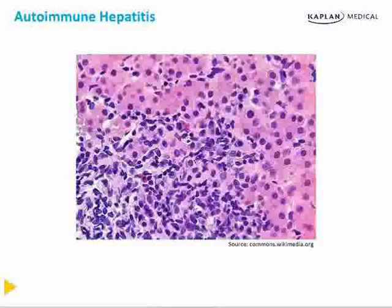Here's a classic example of a liver biopsy with autoimmune hepatitis. Notice the massive number of plasma cells and lymphocytes at the portal tract.